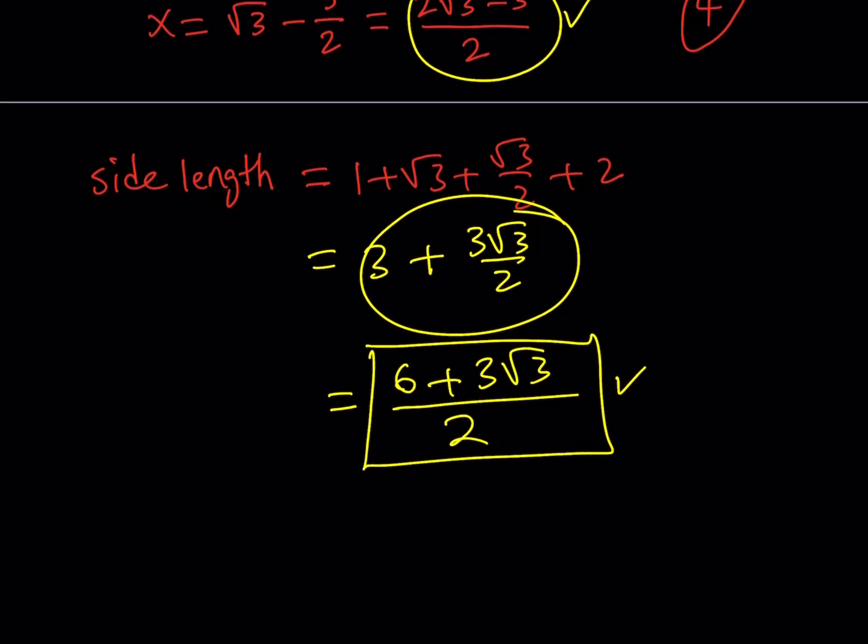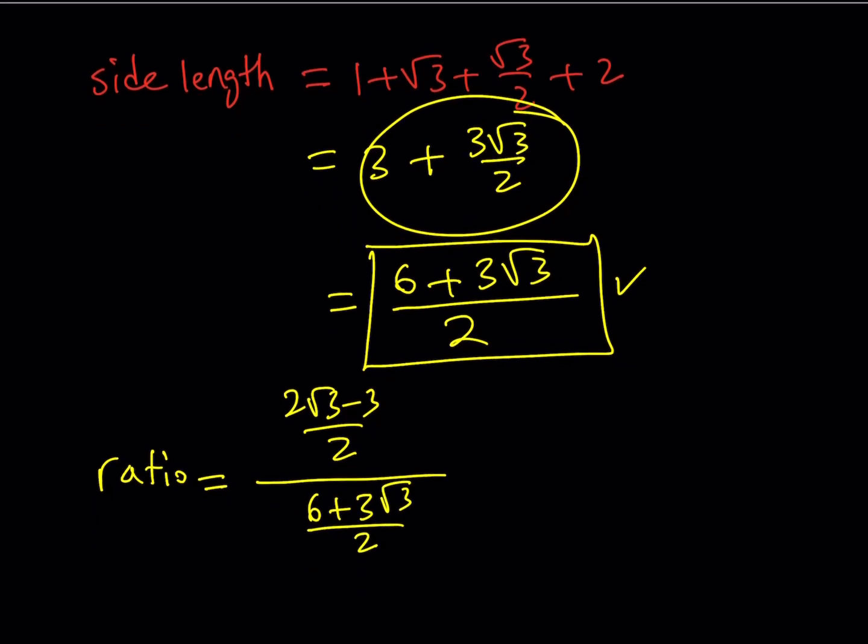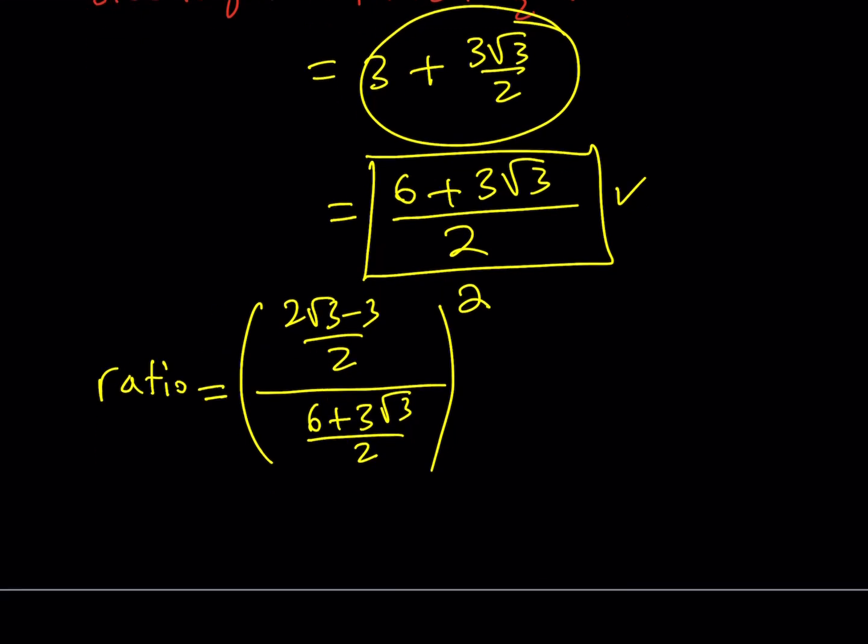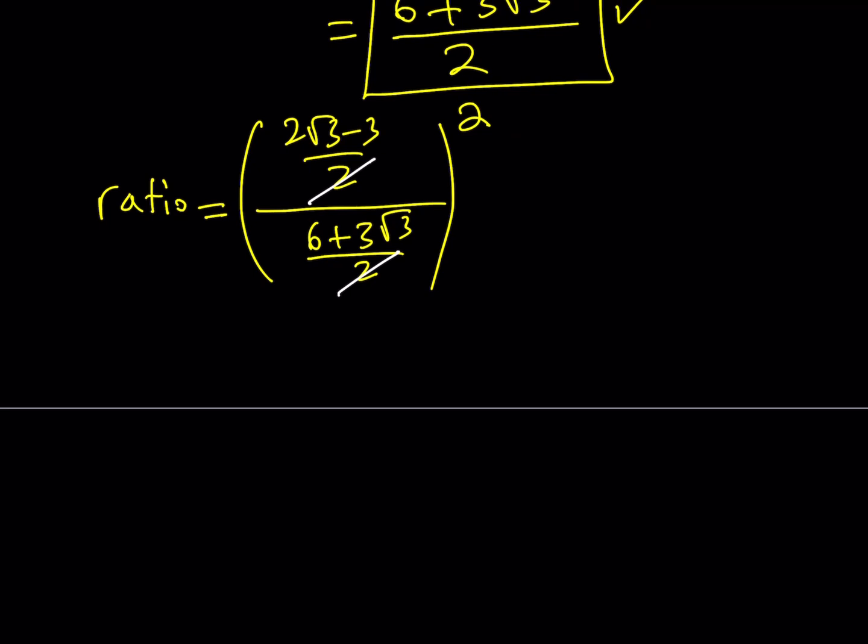So the ratio that I'm looking for is going to be then 2 root 3 minus 3 over 2 divided by 6 plus 3 root 3 divided by 2. And both of them are squared. So what I'm going to do is I'm going to find the ratio first and then square the quotient. Okay. Awesome. Let's go ahead and proceed from here. The 2 cancels out. Then I end up with this. So let's go ahead and simplify that expression. And then we'll go back and square it.